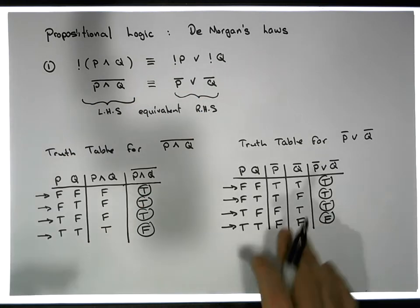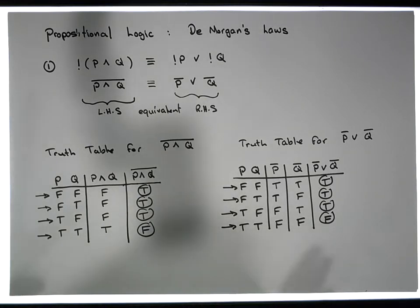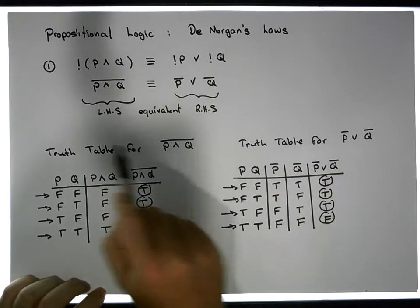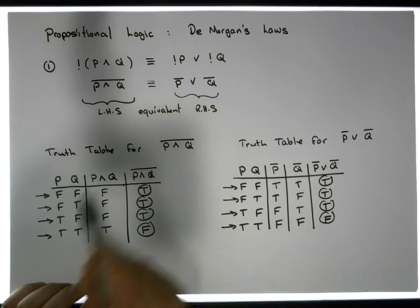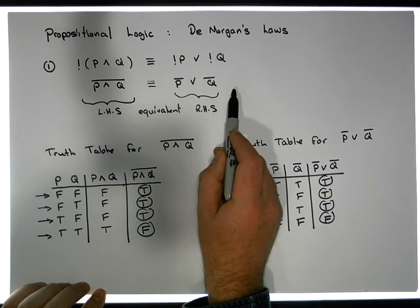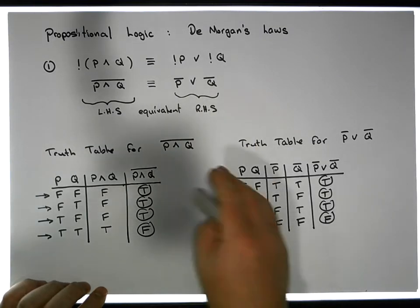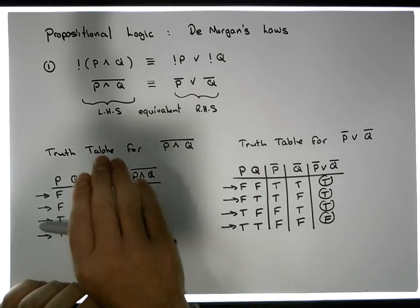Now why is this important? These particular laws allow us to reduce the complexity of our propositional statements and put them into what's known as conjunctive normal form and disjunctive normal form — I'll deal with that in a later video. But importantly, on the left-hand side we have two operators: a negation and an and. On the right-hand side we have three operators: two negations and an or.